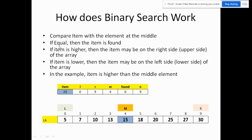Next, we compare the item with the element at the middle. If they are equal, the item is found. If the item is higher, the item may be on the right side of the array. If the item is lower, it may be on the left side. In this example, the item is 20 and the middle element is 15, so since the item is higher than the middle element, it may be found on the right side.